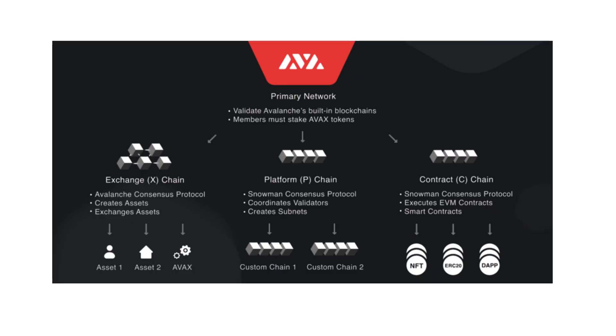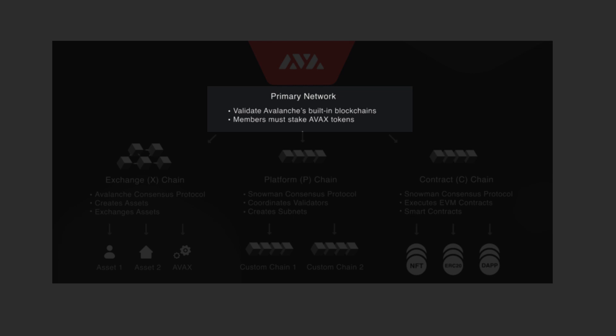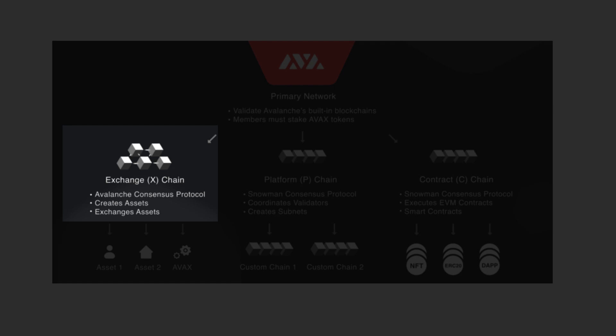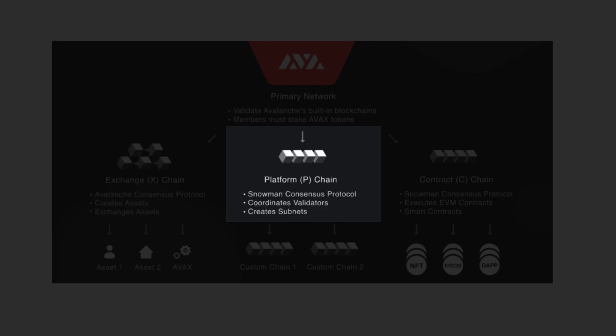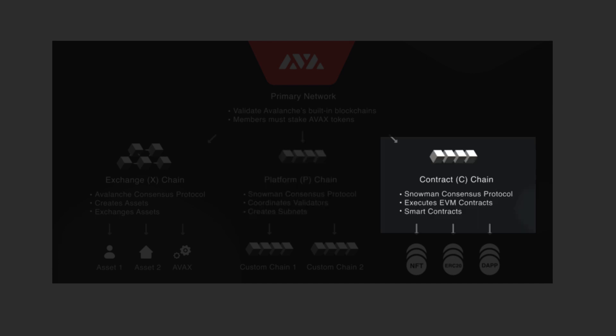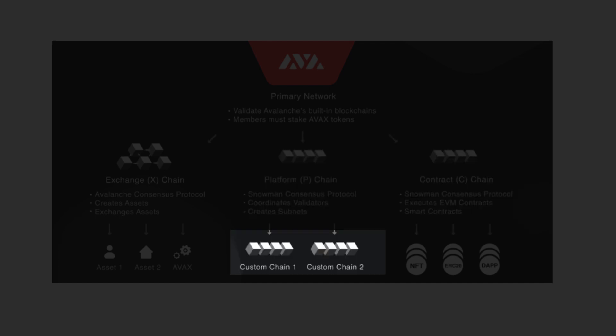Avalanche is composed of four elements. The primary network validates all the chains, like the Beacon Chain on Ethereum 2.0. The X Chain is used for creating and trading on-chain assets. The P Chain coordinates validators. The C Chain is for smart contracts. It's also possible to create other chains with a custom virtual machine.